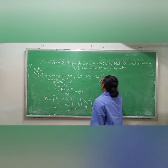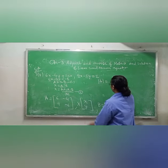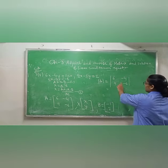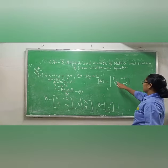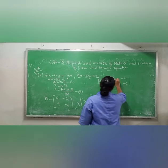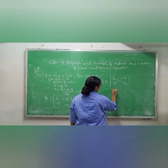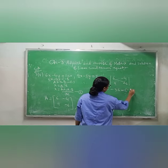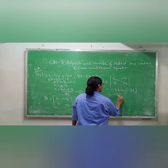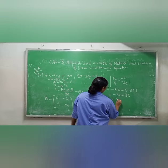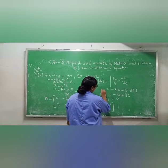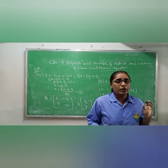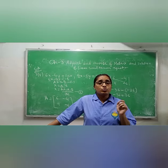We find det(A): the matrix is [6, −4; 9, −6]. Using diagonal multiplication: 6 × (−6) = −36, minus 9 × (−4) = −36. So det(A) = −36 − (−36) = −36 + 36 = 0. Since det(A) = 0, the first condition for inconsistency is fulfilled.